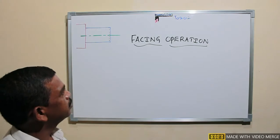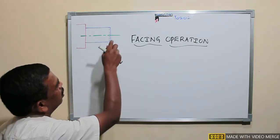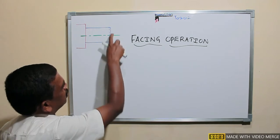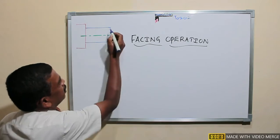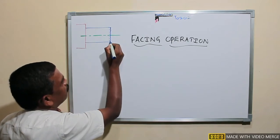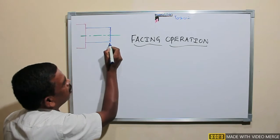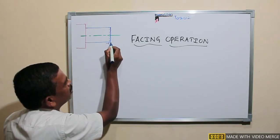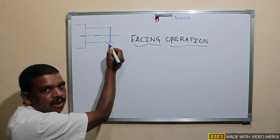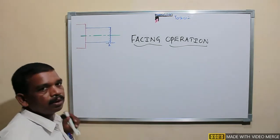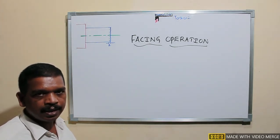Let me write programs and I will explain the step-by-step procedure for removing this extra material from the face of the work. Here a rough surface is there on the face of the work. If you want to remove 1mm material from this, we have to write the commands for our CNC lathe or turning center.